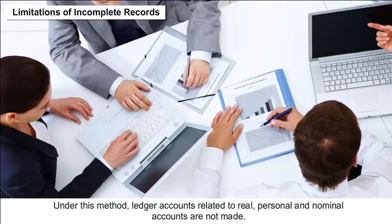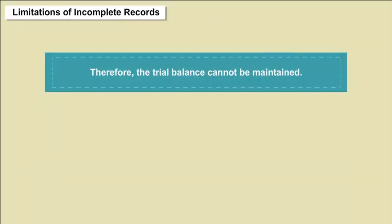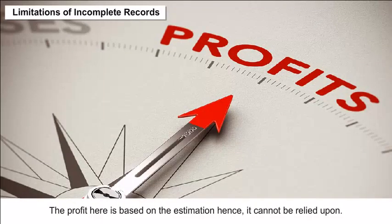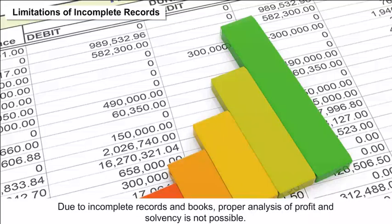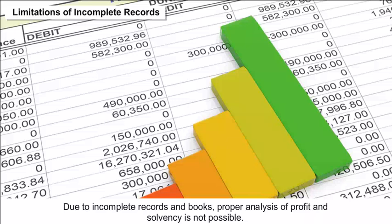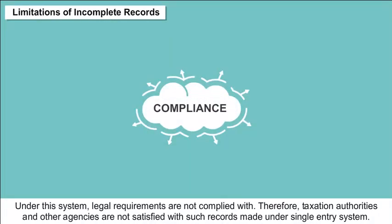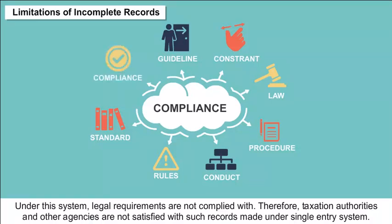Limitations of incomplete records: Ledger accounts related to real, personal, and nominal accounts are not made; therefore, the trial balance cannot be maintained and arithmetical accuracy cannot be checked. Profit is based on estimation and cannot be relied upon. It does not reflect the true and accurate position of assets and liabilities. Proper analysis of profit and solvency is not possible, errors and frauds are difficult to detect, and legal requirements are not complied with, leaving taxation authorities unsatisfied.